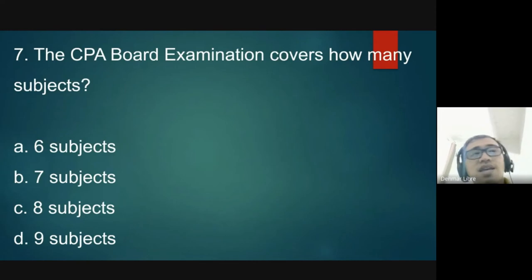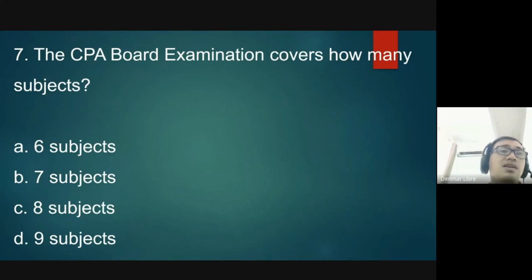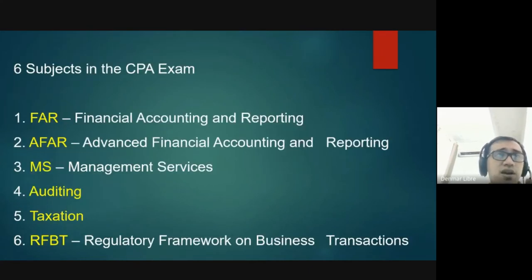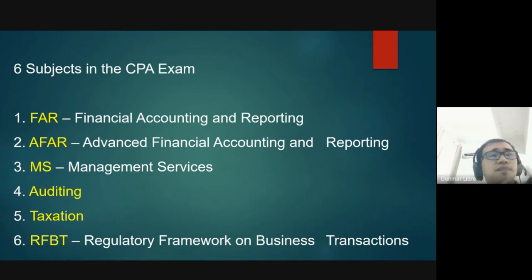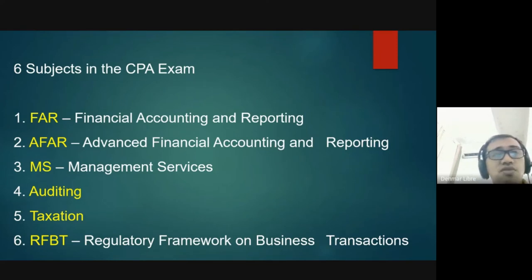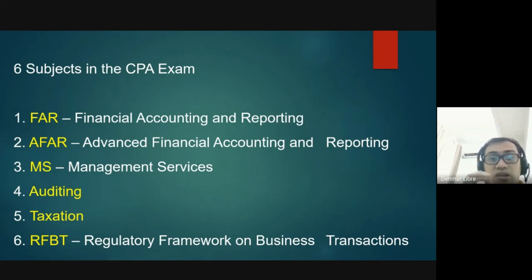Question number seven: the CPA board examination covers how many subjects? The answer is six subjects — letter A. These are: FAR (Financial Accounting and Reporting), AFAR (Advanced Financial Accounting and Reporting), MS (Management Services), Auditing, Taxation, and RFBT (Regulatory Framework and Business Transactions), which was formerly called Business Law. Two subjects are taken per day, so the exam spans three days.